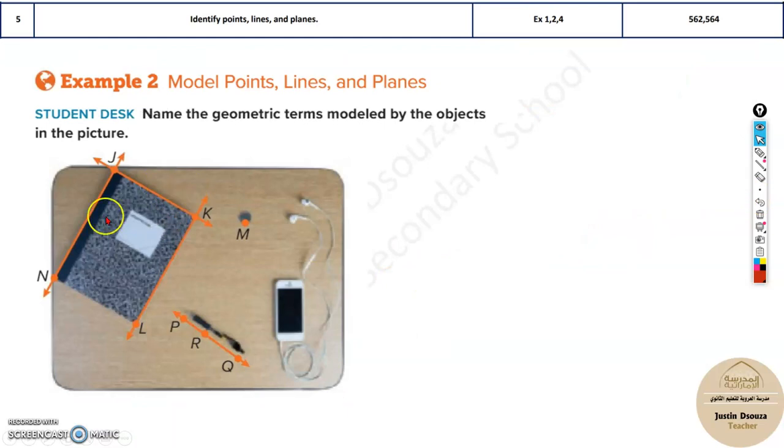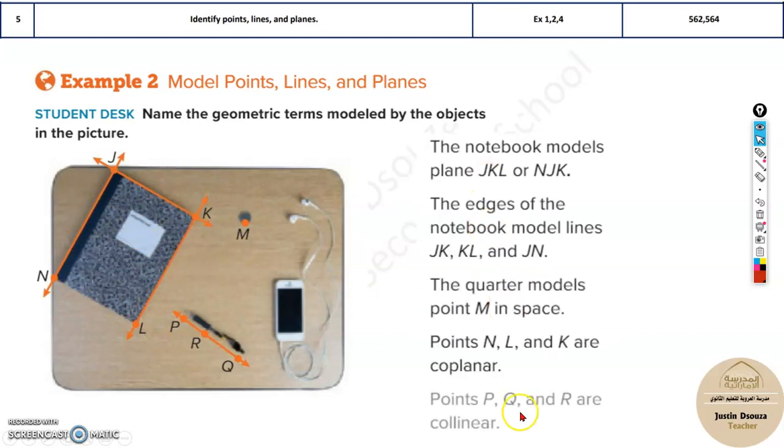We have a figure over here, and they are asking us to name all the objects. See, now this is a book. It can be modeled as a plane. The ends of this can be modeled as a line. And this pen is a line. This point over here is a point. And so on. Usually you will be asked a question to mention, say, for example, which are the lines in the book. And they'll give you four options. Go through all the options and deduce the correct one.